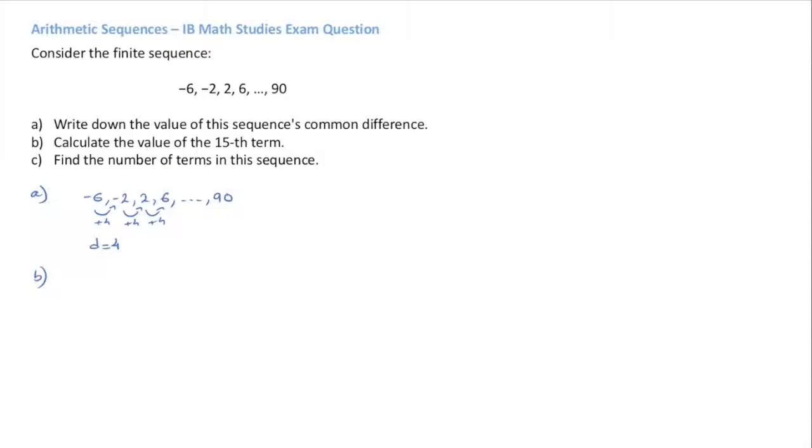The next question, B, we're asked to calculate the value of the 15th term. Well to do this, what we really need is to know the formula for the nth term of an arithmetic sequence, and this is in the IB formula booklet, and the formula is UN, the nth term, equals U1 plus N minus 1 times D.